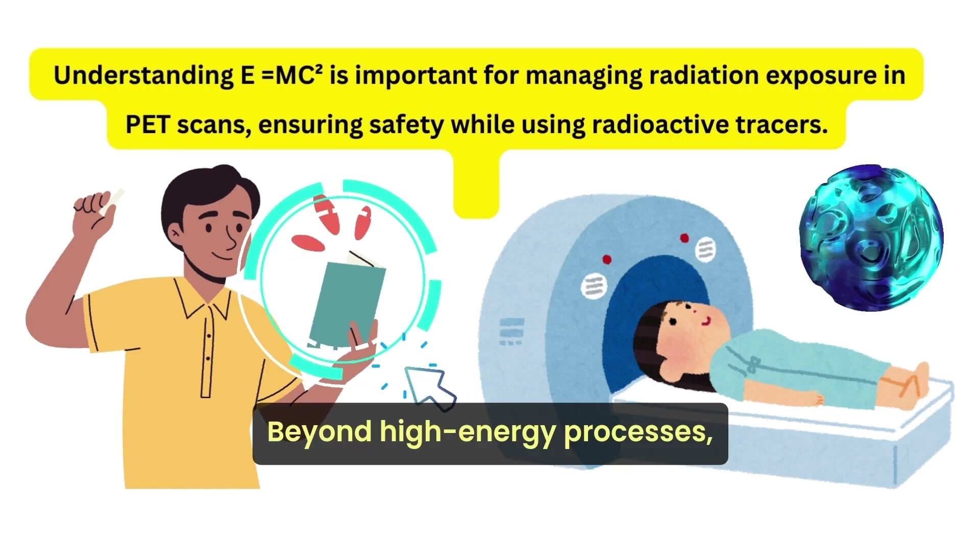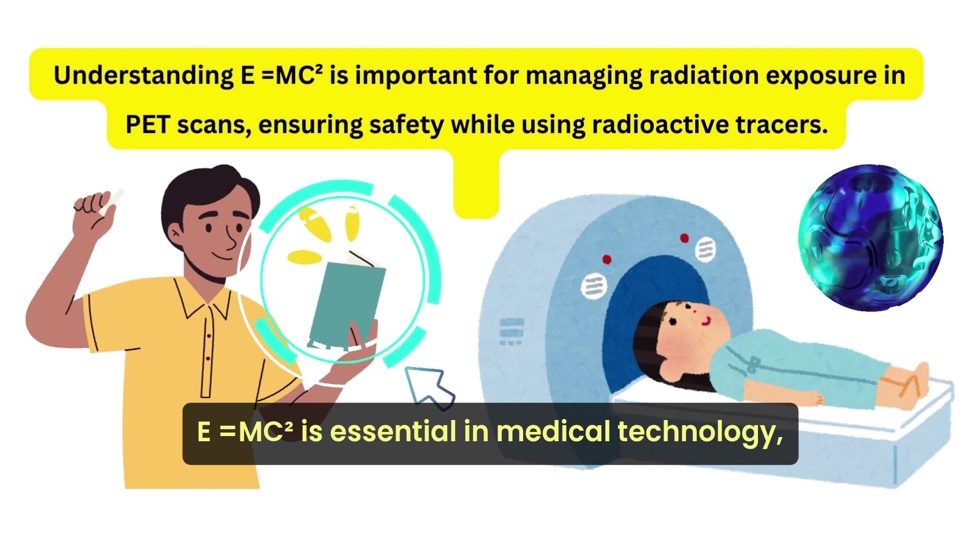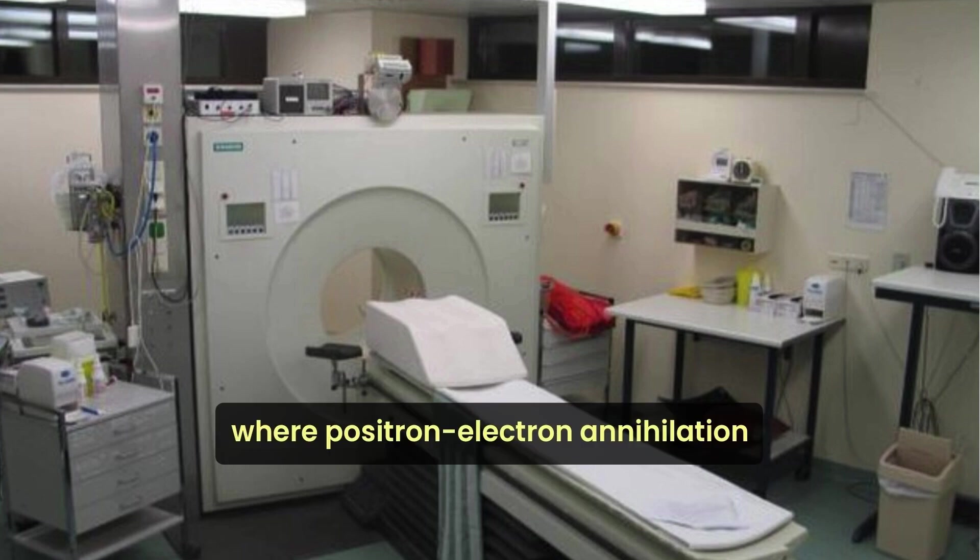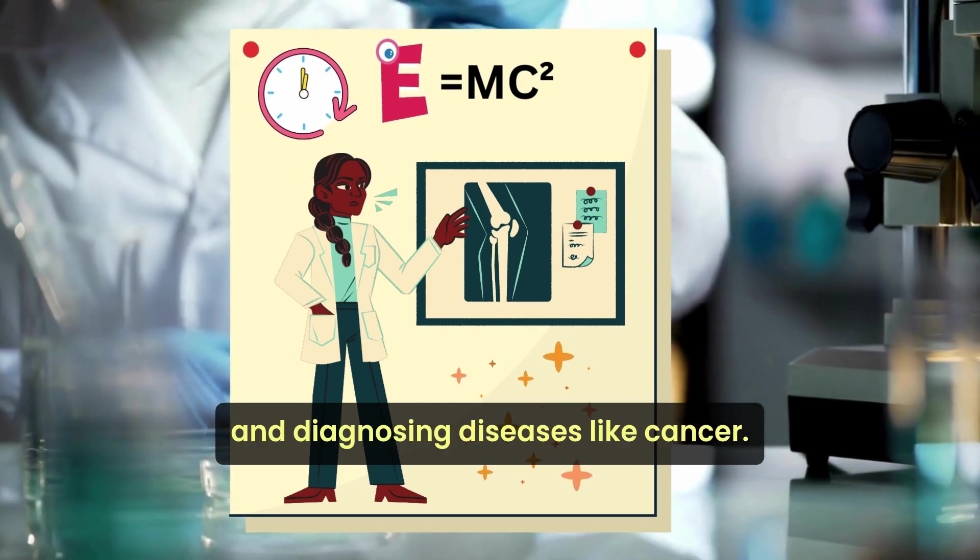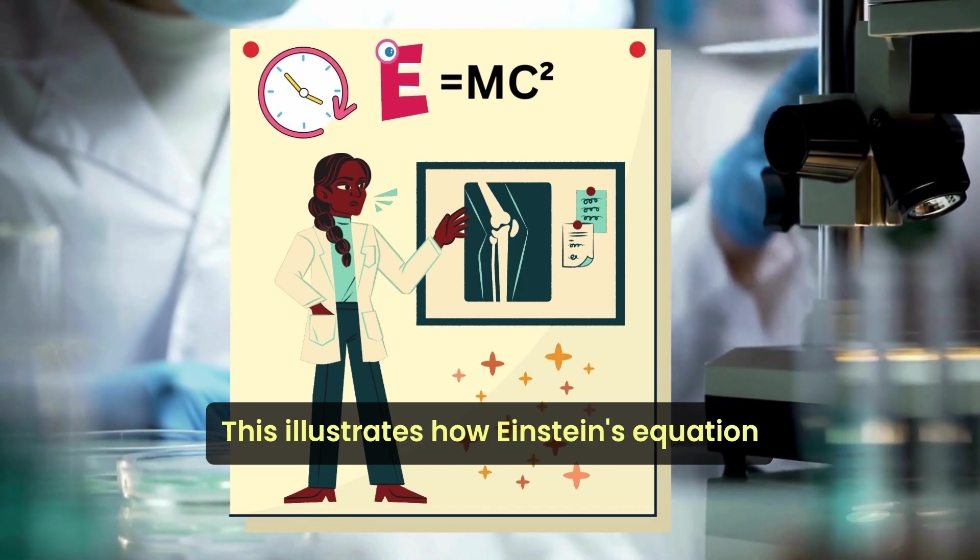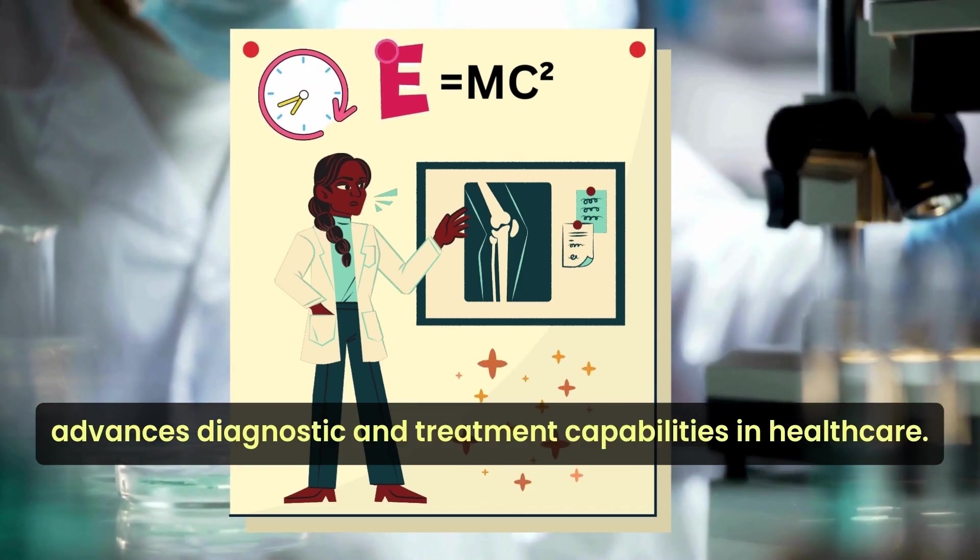Beyond high-energy processes, E equals mc squared is essential in medical technology, such as PET scans, where positron-electron annihilation generates gamma rays for imaging and diagnosing diseases like cancer. This illustrates how Einstein's equation advances diagnostic and treatment capabilities in healthcare.